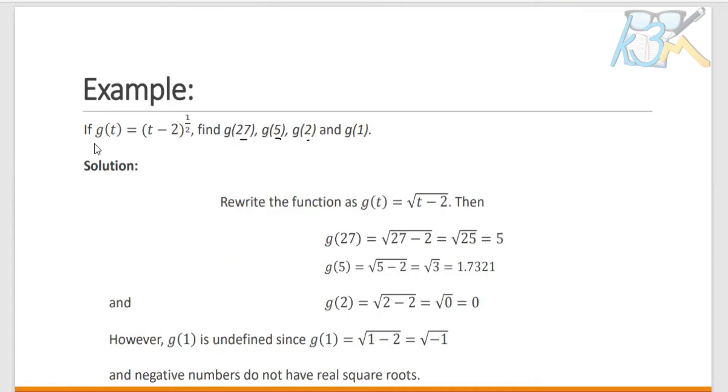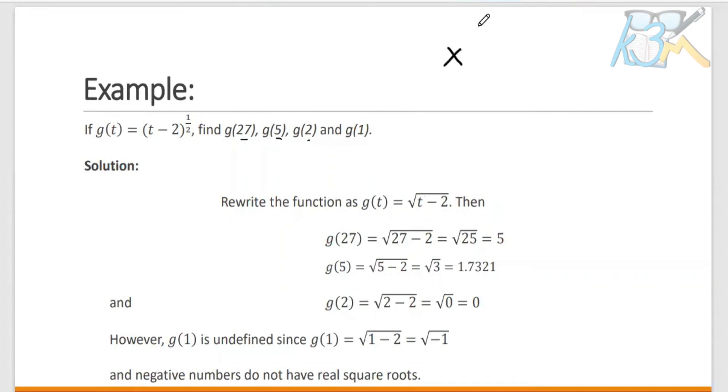And now we go to another example. If G of T equals the quantity T minus 2 raised to 1 half, find these functions. Recall that X raised to A over B equals the B root of X raised to A, whenever these constants A and B are positive integers.